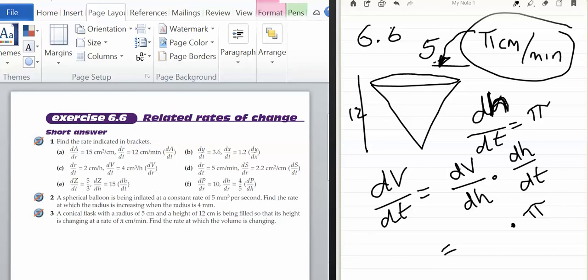I need to get a connection between v and h with this cone. I know that the formula for a cone is v equals one third pi r squared h. I can't take the derivative because I have r and h.